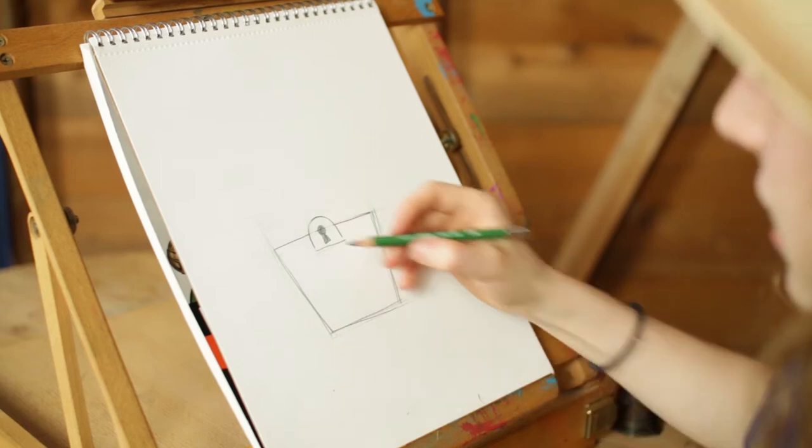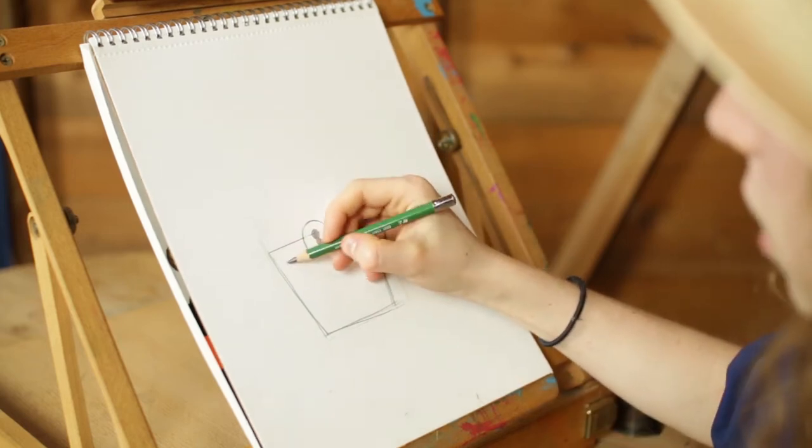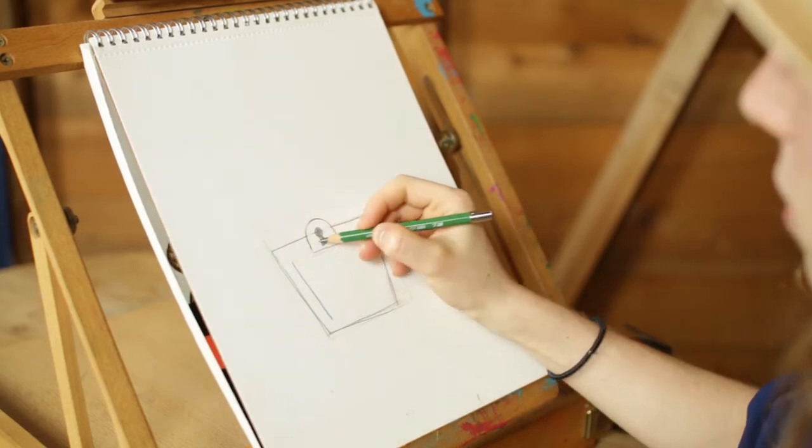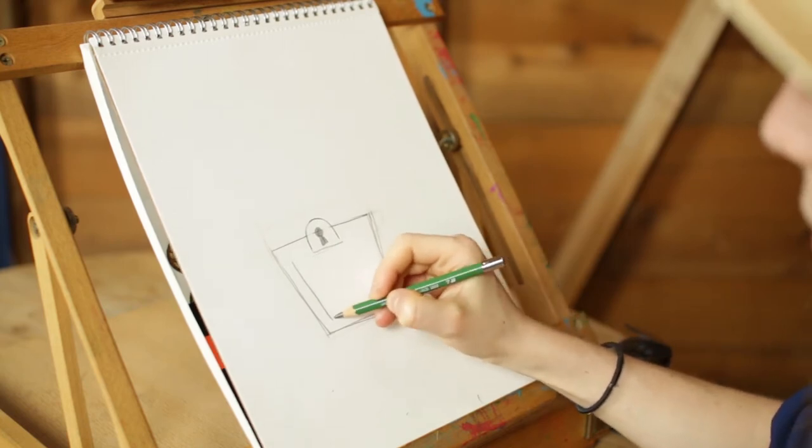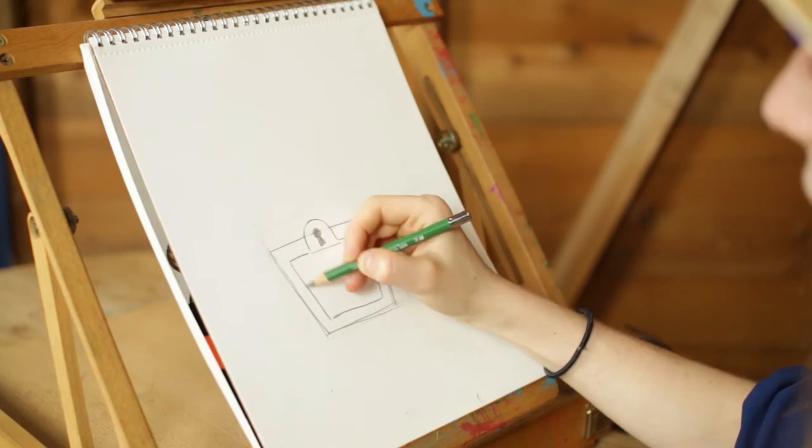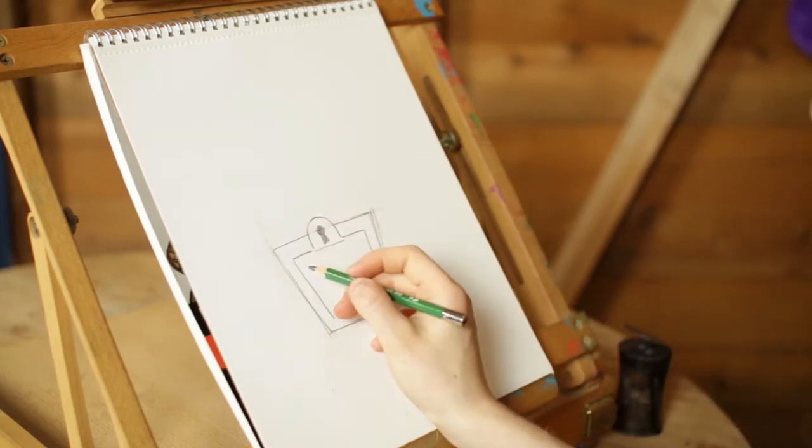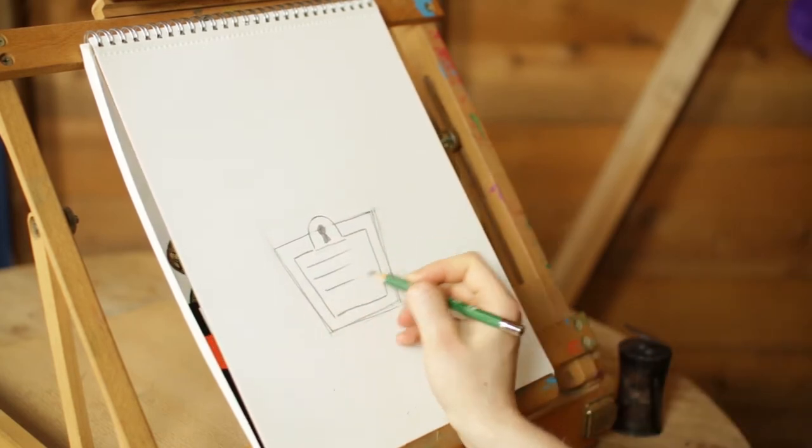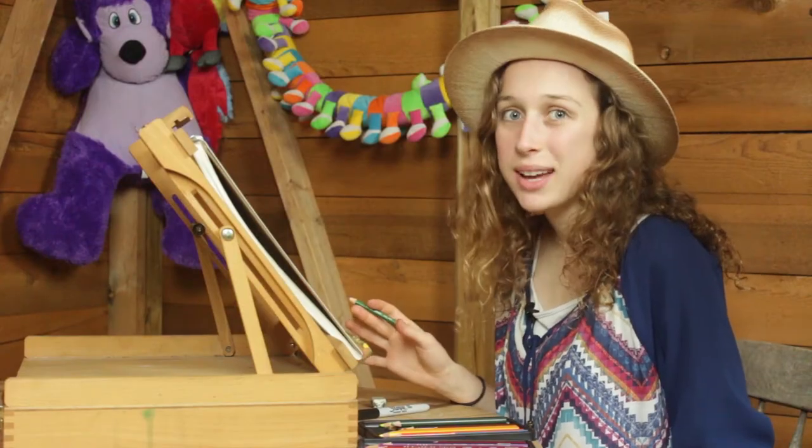Then for our treasure chest, let's go in and let's draw another line here. We're going to follow this square sort of trapezoid shape that we made. And we're going to bring it around. This is going to be kind of the outside of our chest. And then let's draw a few lines here. This is going to show the wood that makes up our chest.